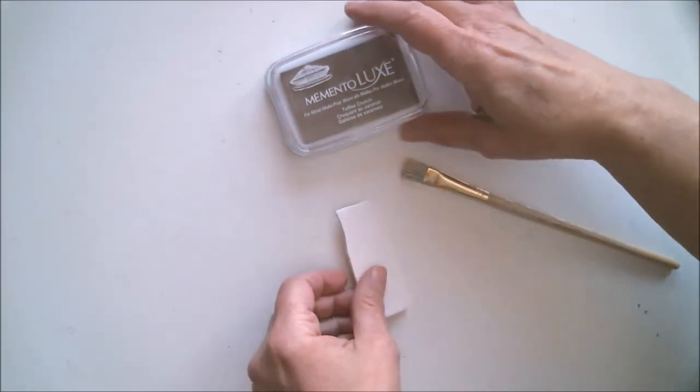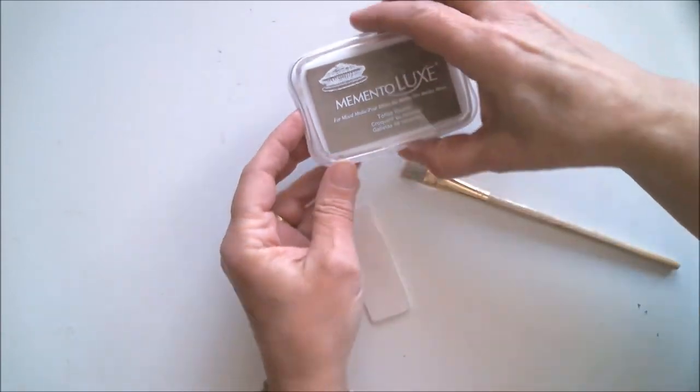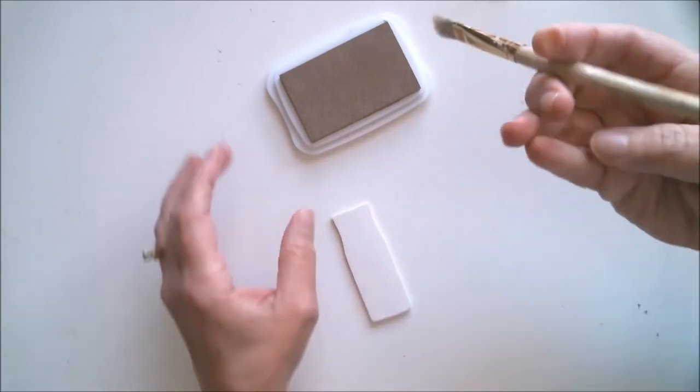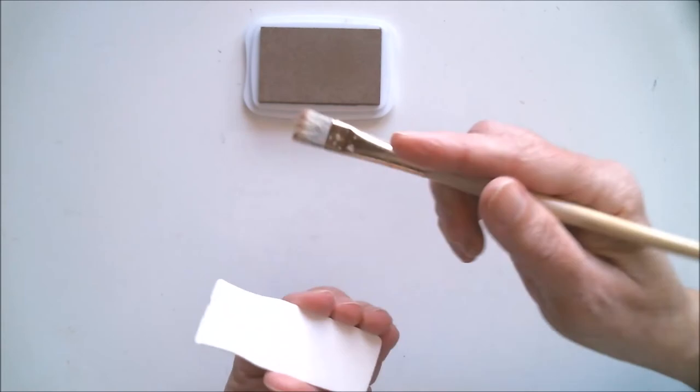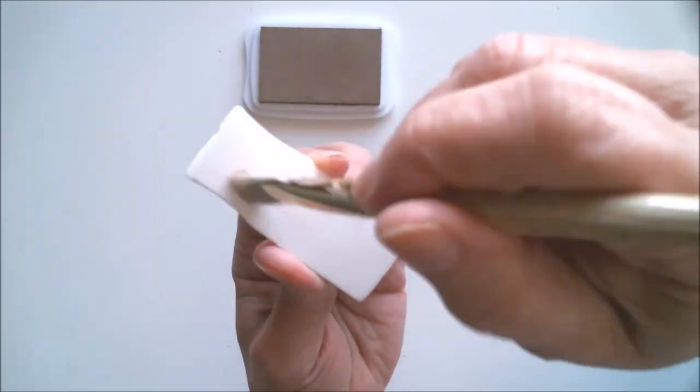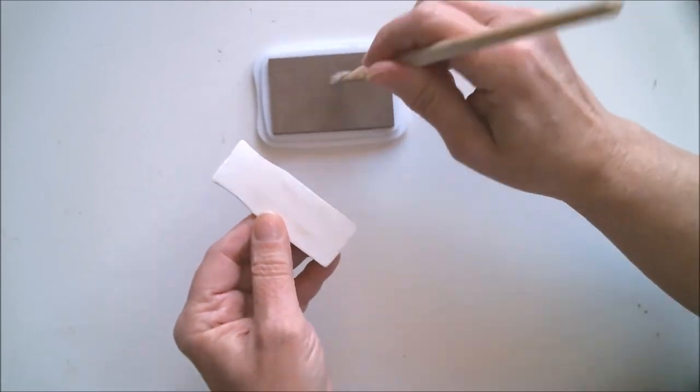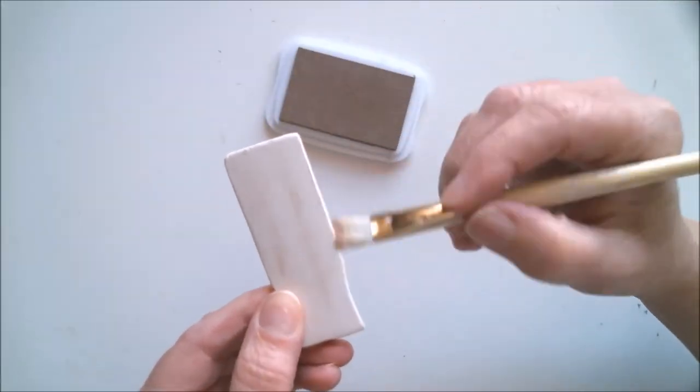For this one, I'm giving it a distressed aged look by using a stiff paint brush and Memento Luxe ink in Toffee Crunch. This is an archival mixed media ink, so it will work perfectly for this. And I just get some ink on the brush and then gently swipe it on until I get the look I want. You can add as little or as much of this ink as you want just to get the right effect.